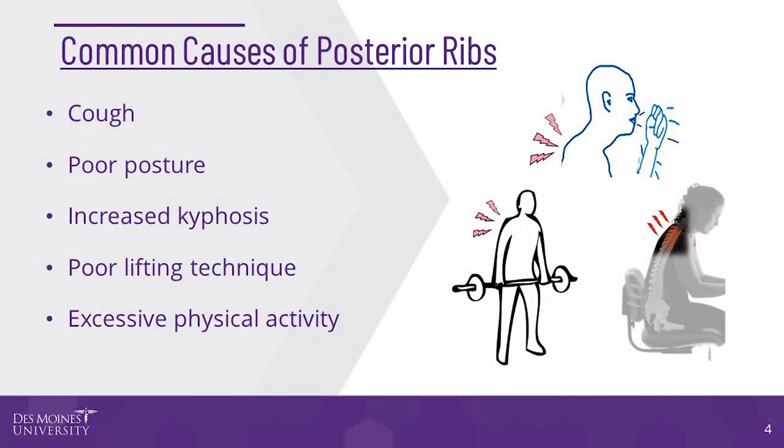As a structural rib dysfunction, posterior rib somatic dysfunction tends to be more articular in nature and can be the key rib of restricted groups of ribs in inhalation, exhalation, or both. Common causes for posterior rib somatic dysfunctions include cough, poor posture, increased kyphosis, poor lifting technique, or excessive physical activity.